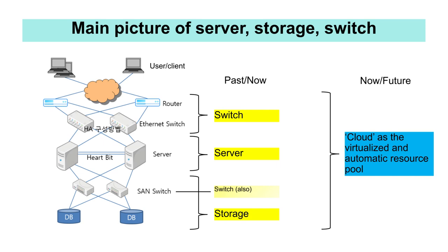Here is a typical configuration consisting of servers, storage, and switches. In the middle part, there is a server first, and there is storage under the server, and there is something called a SAN switch that connects the server and storage. At the top of the server, there is also an Ethernet switch for connection to other servers, which is connected to a router for communication with the outside world, and at the top is a client — in other words, a user — who requests services from this server.